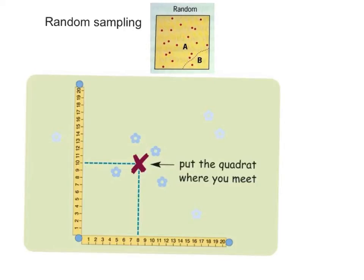Random sampling involves the random selection of a parent population using, for example, a random number table or pulling numbers from a bag. Usually you set up a grid. In this example, I've got a 20 by 20 grid.